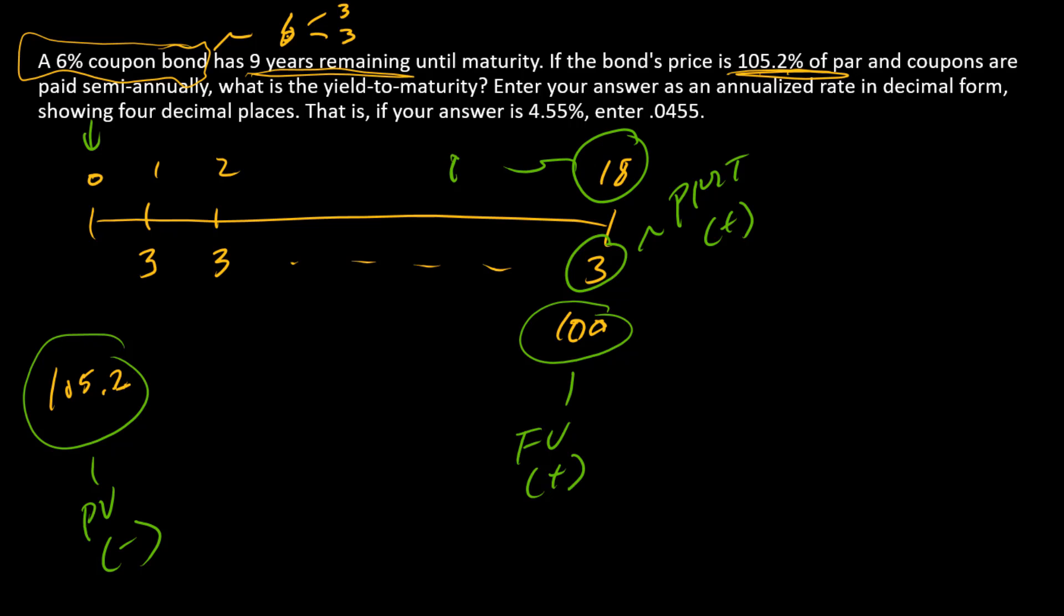And then finally, 18 is going to go into N. And so we'll input all of these numbers into our financial calculator and solve for I.